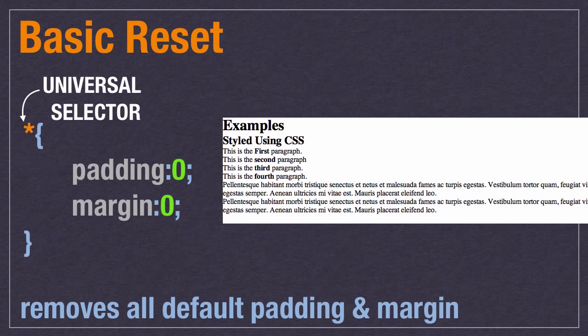There are much better and more sophisticated resets, and we'll talk about those in another video. The basic reason for a reset is that you want to remove all those browser defaults so that you can apply your own styles. It gives you more control over the page and makes it more likely to look similar across different browsers. This particular reset uses the universal selector, which selects everything on the page. We're using it here to remove all the default padding and margins — two of the big things added by browsers — but generally you should shy away from using it.